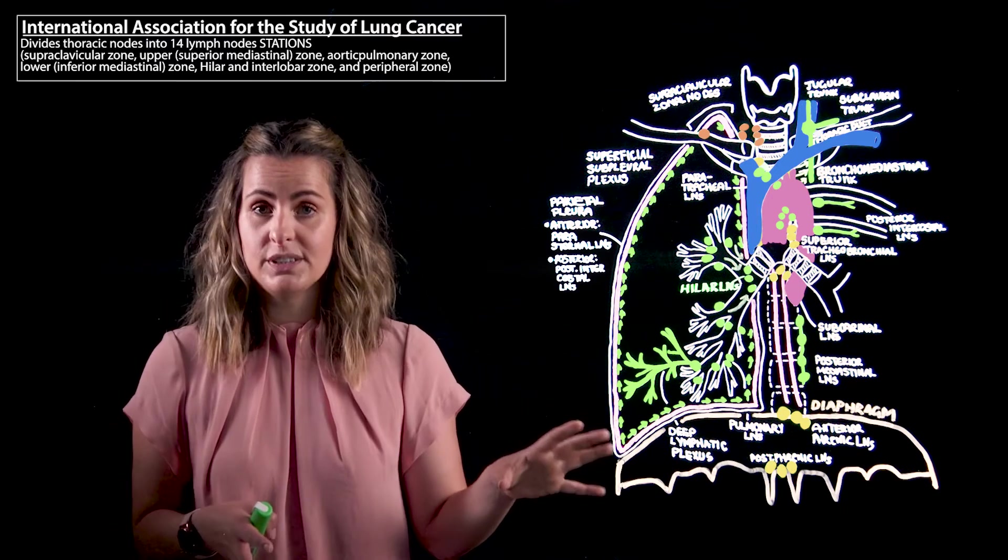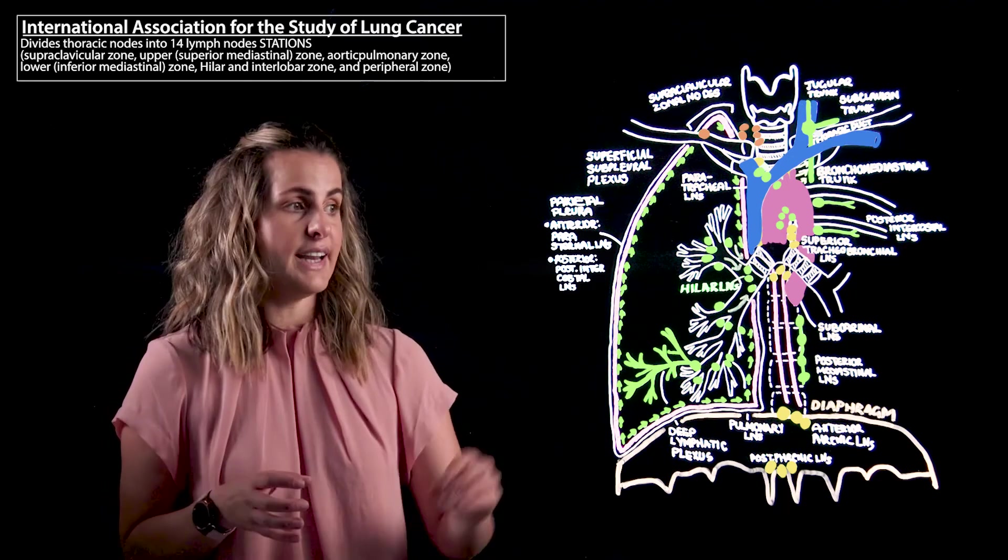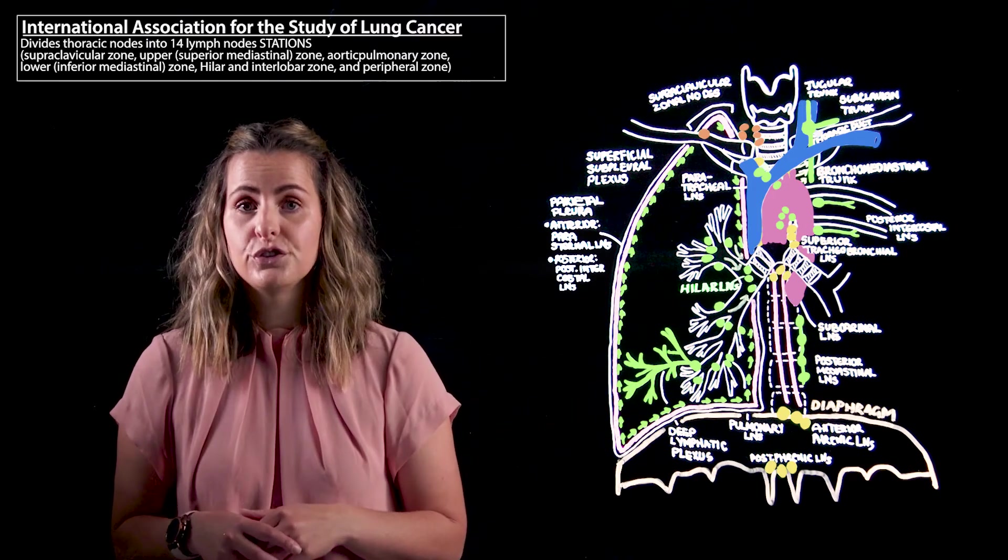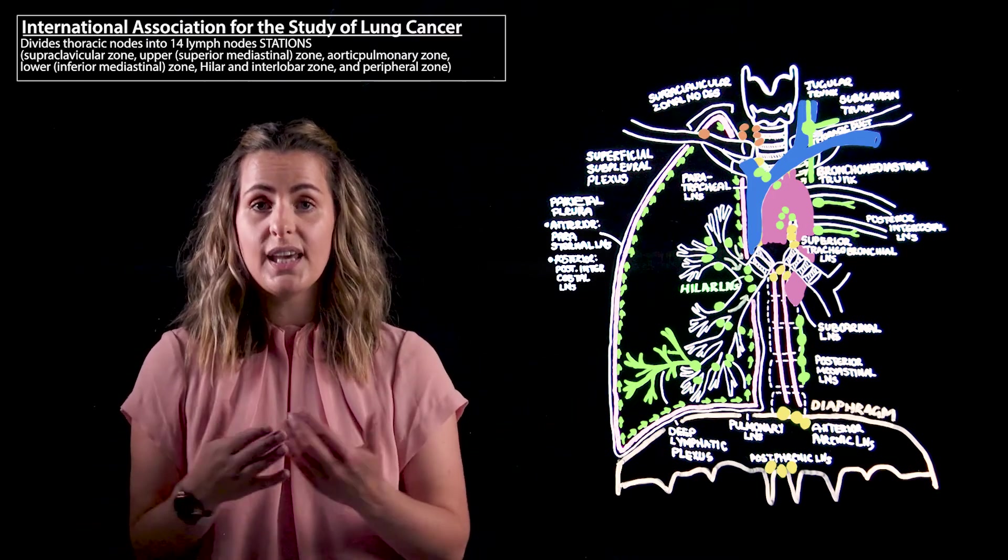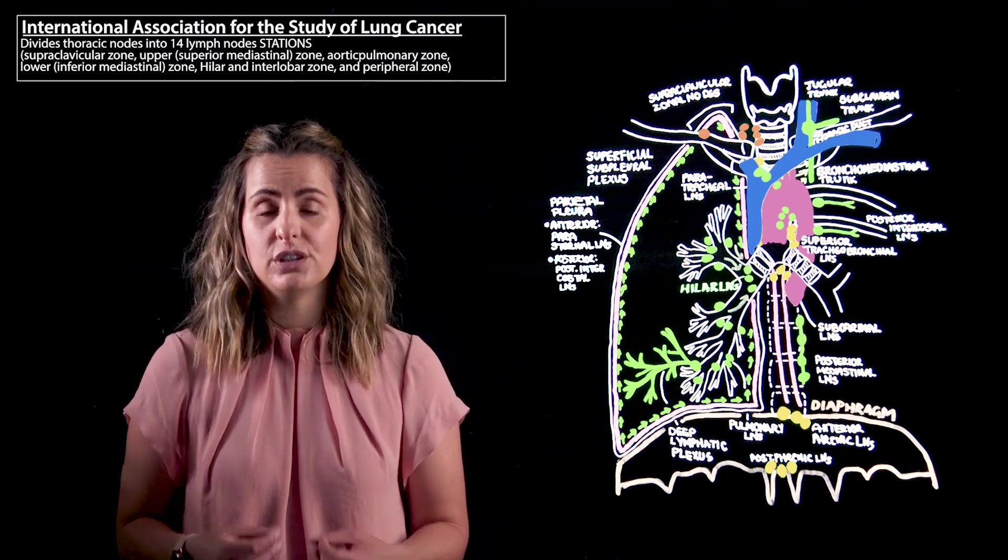In the inferior mediastinum we then revisit our subcarinal or inferior tracheobronchial nodes and we also find some nodes either side of the esophagus and these are termed our paraesophageal lymph nodes.